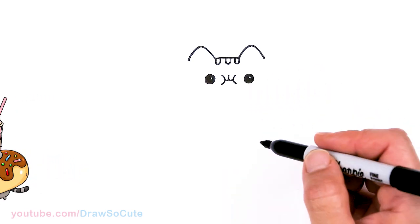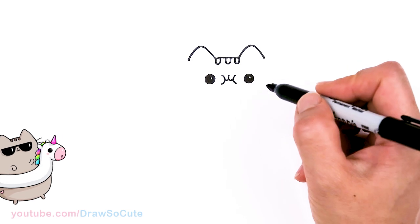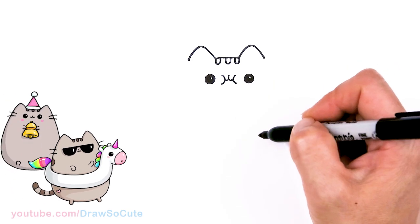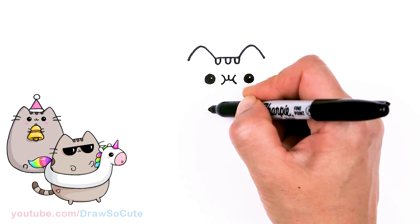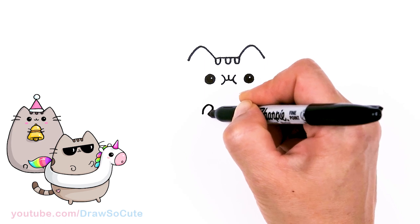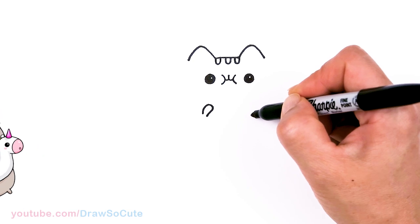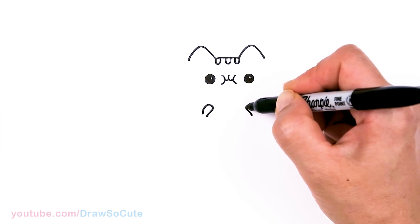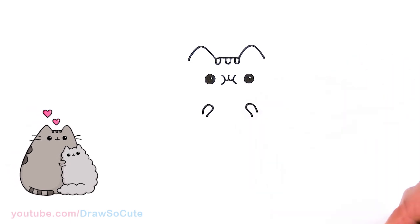So now that we have Pusheen's face in, let's go ahead and draw the cotton candy and the corn dog that she's holding. Let's come straight down where her eyes are, come down to say about this area. I'm just going to go ahead and draw one hand right there. And same thing on the other side, so about right here. Let's draw a little paw that comes out right under the eyes.